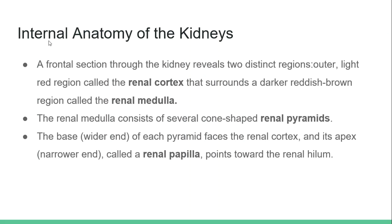The renal medulla consists of several cone-shaped renal pyramids. The base, or wider end, of each pyramid faces the renal cortex, and its apex, the narrower end or renal papilla, points towards the renal hilum.